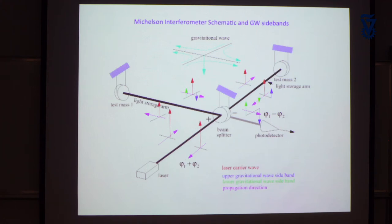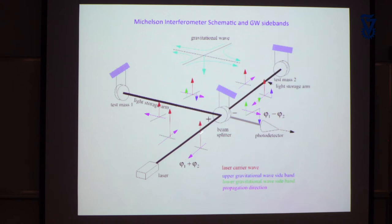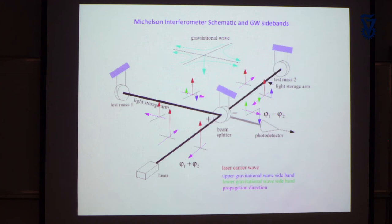Now let me go one level deeper and show what happens to the light when a gravitational wave comes down on it. The purple shows the direction of propagation of the light; red is the carrier light from the laser. It propagates down, hits the beam splitter — there's a plus and minus sign on the beam splitter to satisfy Maxwell's equations. On the plus side, when the electric field reflects, it stays in the same sense; on the minus side, the electric field flips.